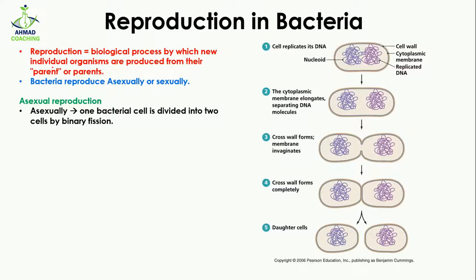Bacteria reproduce either asexually or sexually. When we talk about asexual reproduction in bacteria, it means that only one bacterial cell is divided into two bacterial cells by binary fission. For asexual reproduction, the bacteria is going to use the binary fission process.